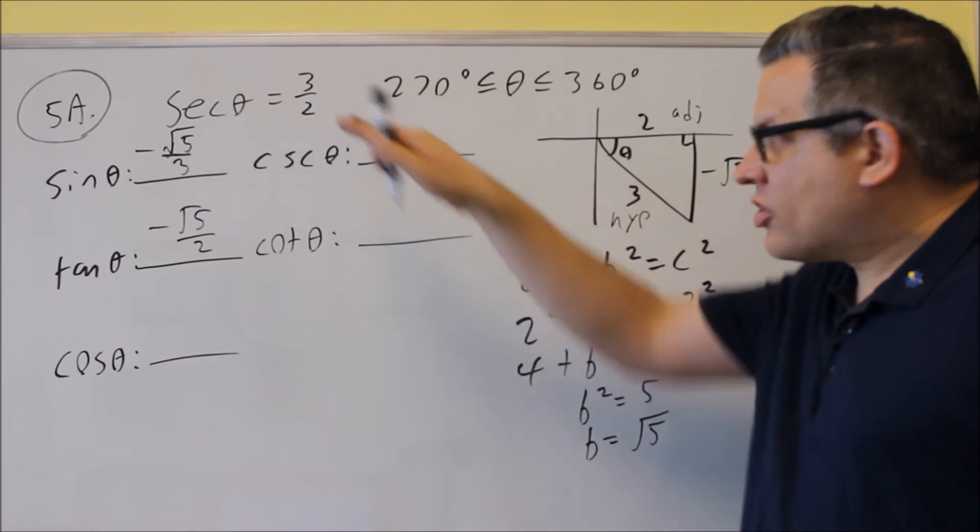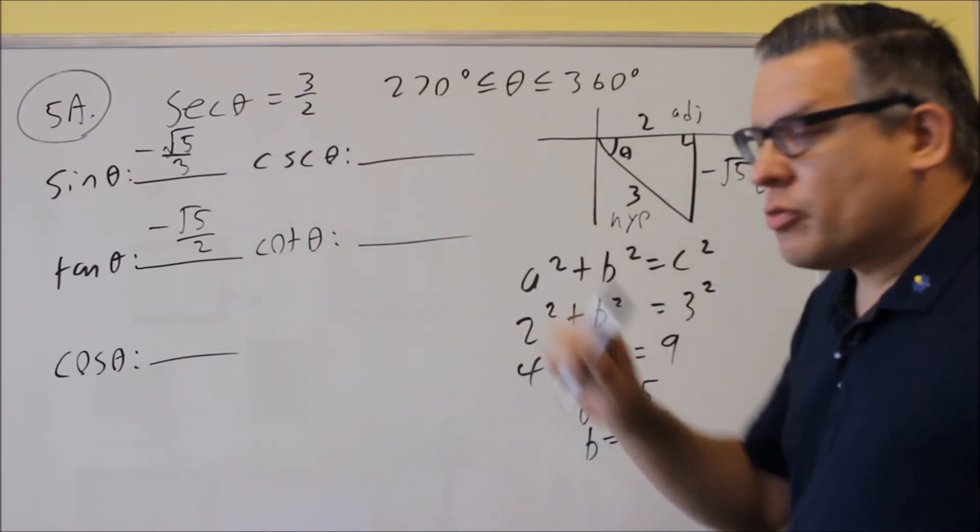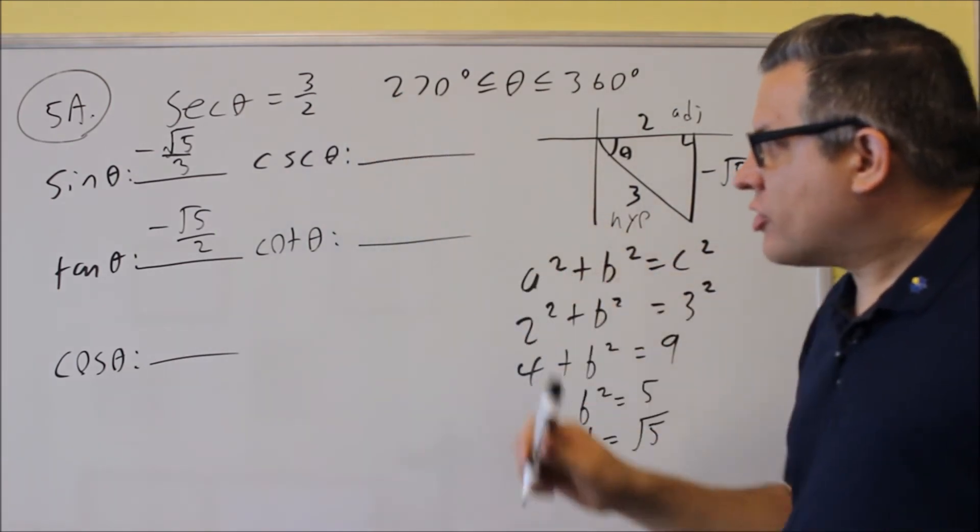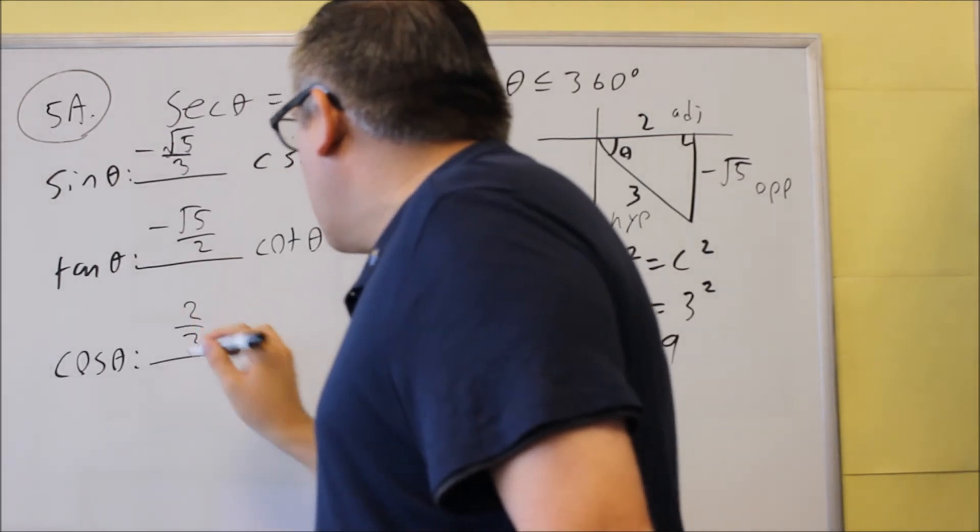Cosine is just going to be the reciprocal of the original one. It's the reciprocal of secant. So if we take the reciprocal of that one, it's going to be two-thirds.